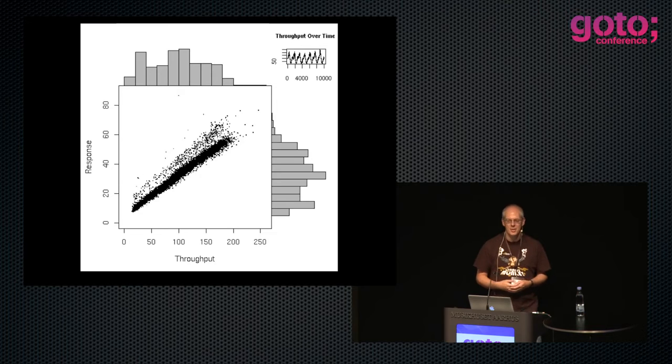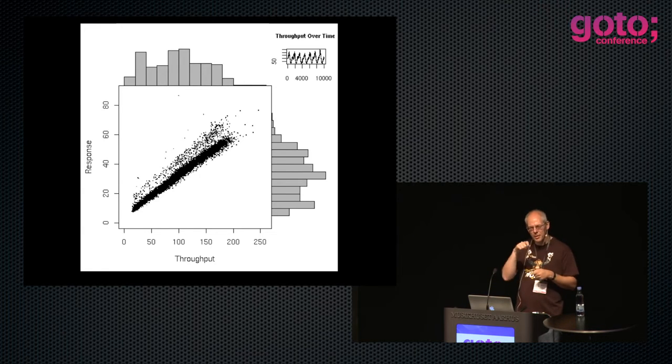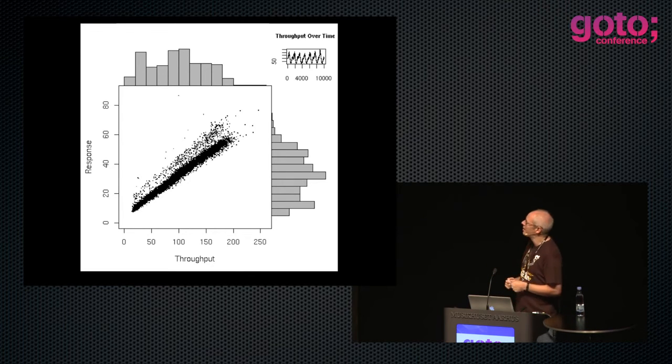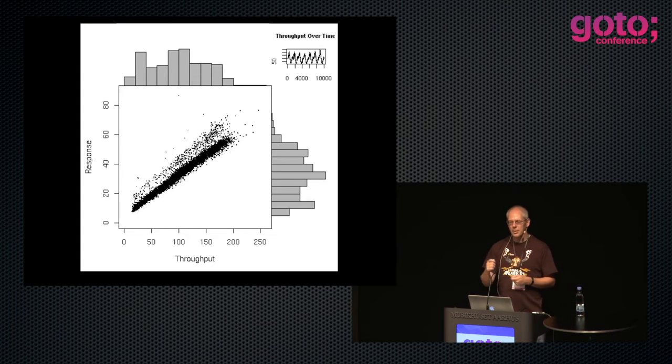What happens if instead of Aarhus, it's Hawaii — and instead of beer, we're delivering Mai Tais? Mai Tais are much more complicated; they have umbrellas in them. If there's only one person who knows how to put the umbrella in, that causes a different kind of bottleneck. You end up with a distribution that looks like this. This is what happens with lock contention — a serialization point where only one person can do that step. If I double the throughput, I double the response time. I'm just blocking on one thing. That's a very different shape of graph.